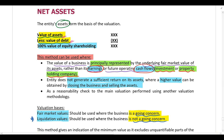This method is also often used as a reasonability test. At the beginning of this lecture, we noted that we always have a principal or main valuation, which is then supported by a reasonability test. We use one methodology to perform the main valuation and any other methodology as a reasonability test, and the net asset method is often used in that role.